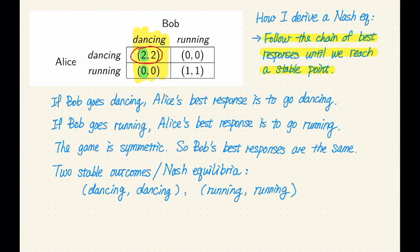So in fact, Alice is currently playing a best response to Bob's strategy because she is getting the highest utility that she could possibly get. Switching running actually causes her to get a lower utility, so she does not want to do that. In fact, we have reached a stable point because both Alice and Bob are playing best responses to each other's strategy. Therefore, this is a Nash equilibrium.